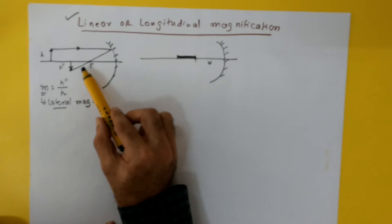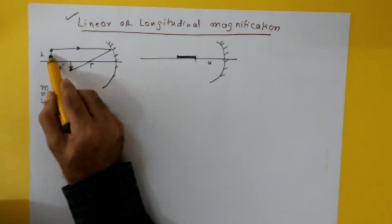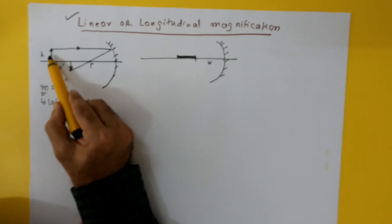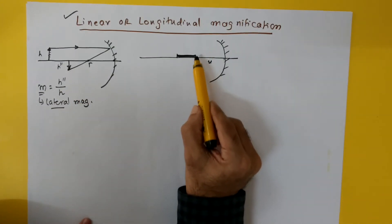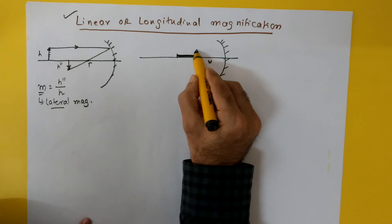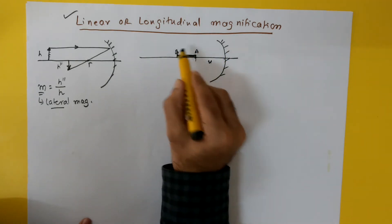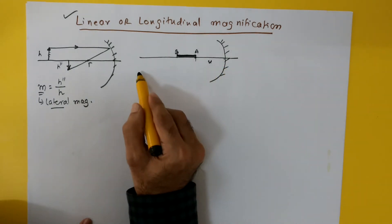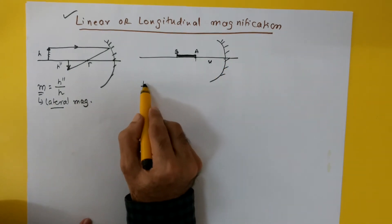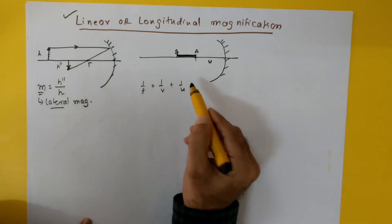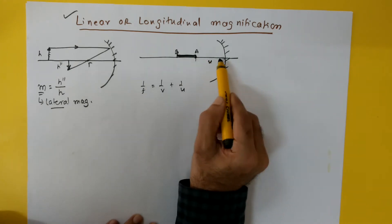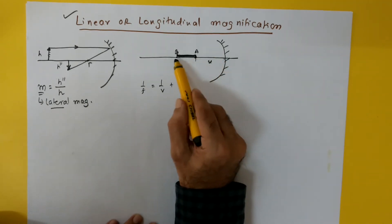The primary difference between this case and the lateral case is that here all points of the object were at nearly the same distance from the mirror. But in this case, if I call one end point A and the other point B, they are at different distances from the mirror. Using the mirror formula — 1/f = 1/v + 1/u — it is difficult to decide what value of u to use, since point A is at distance u while point B is at distance u plus something.